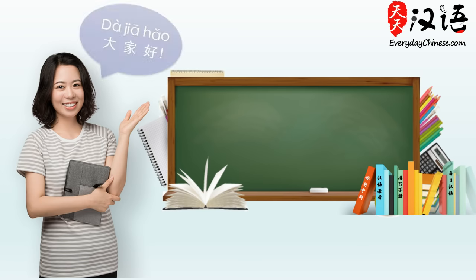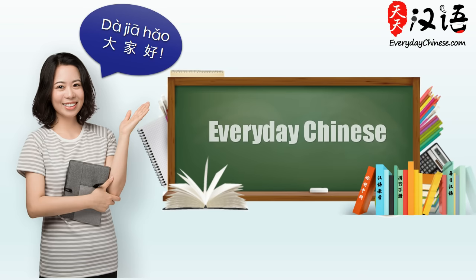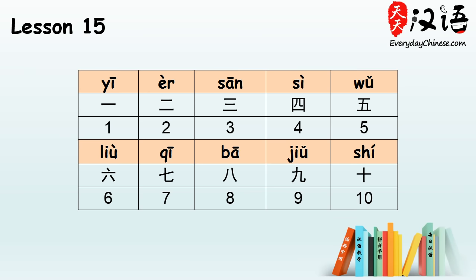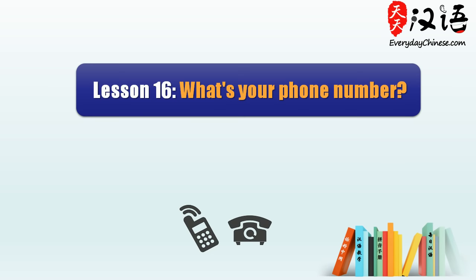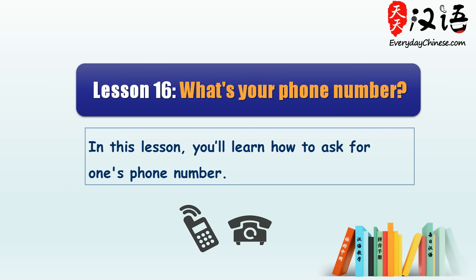Hello, everyone! 大家好! Welcome to today's Everyday Chinese. Do you still remember how to say the Chinese numbers from 1 to 10? In today's lesson, let's make a practice of the small numbers. For example, how to ask for someone's phone number. Now let's get started.